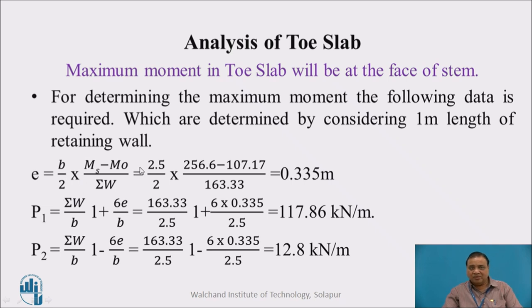B by 2 is 2.5 meter, as B is 2.5. This is the sum of stabilizing moments and this is the destabilizing moment. The difference between these two divided by total downward load will give us eccentricity.